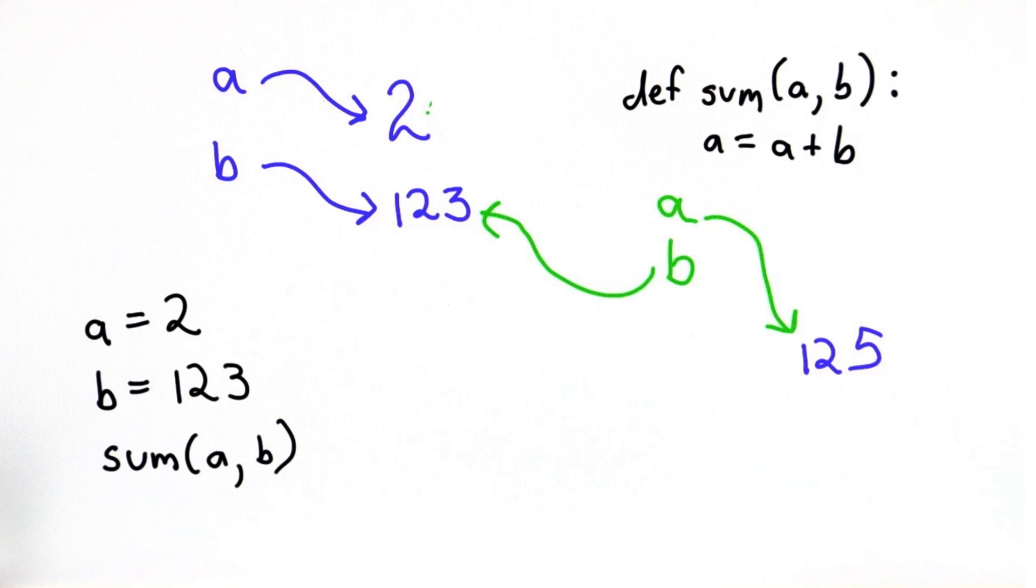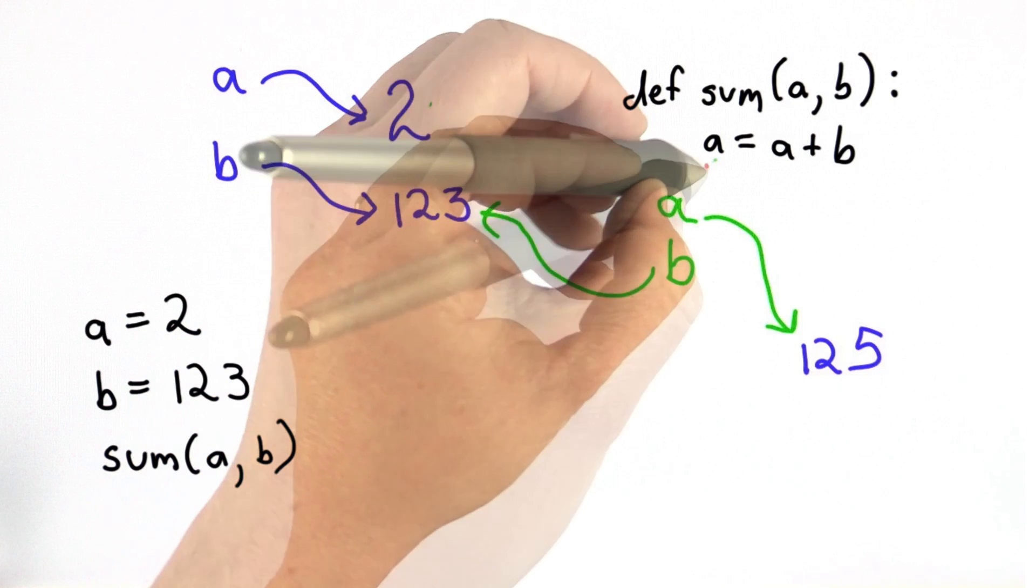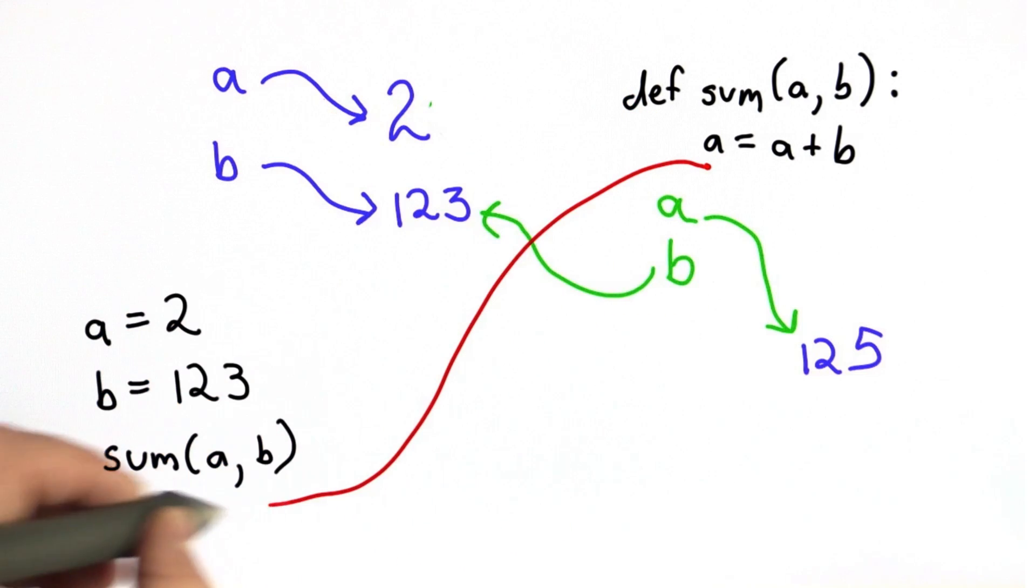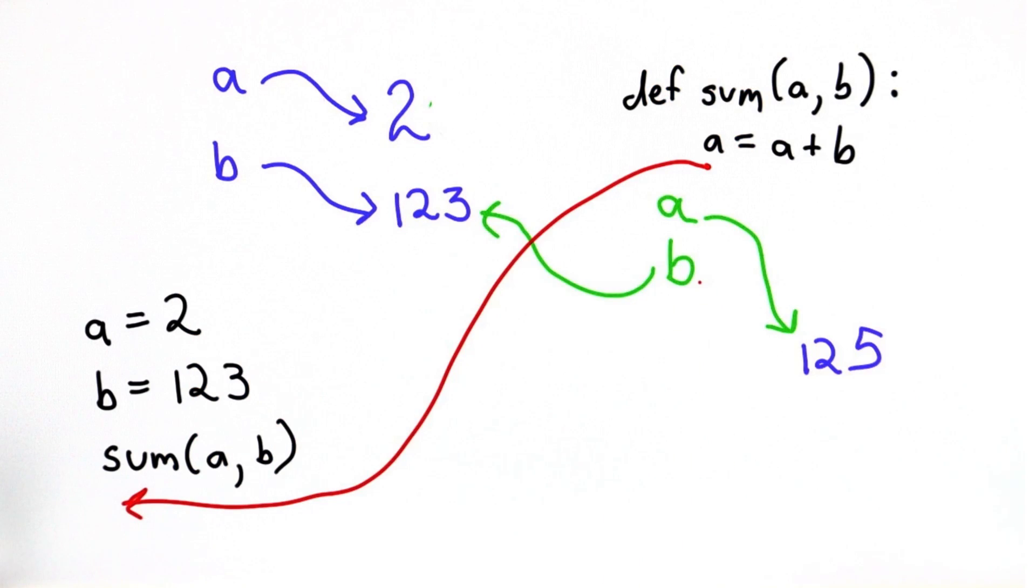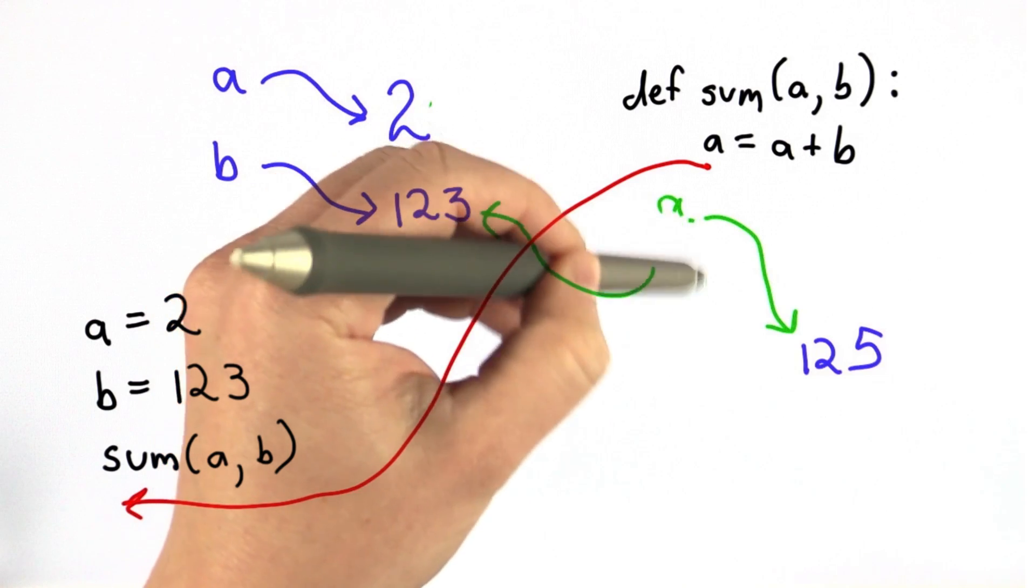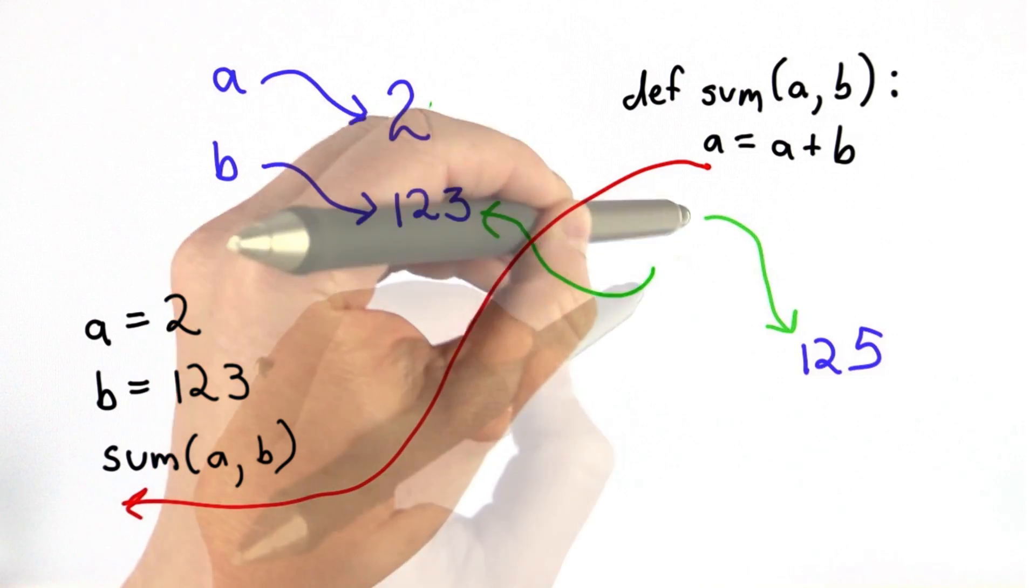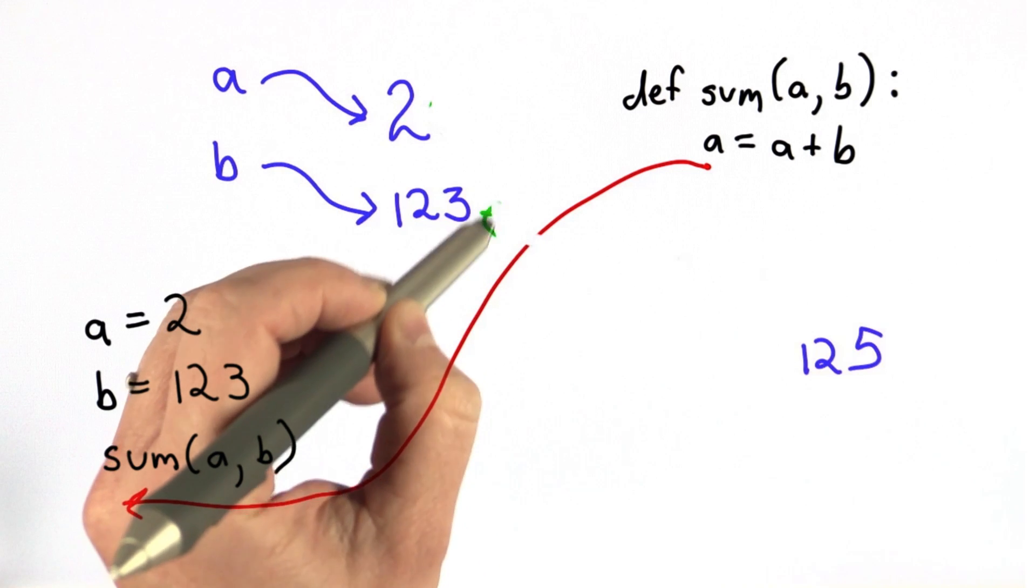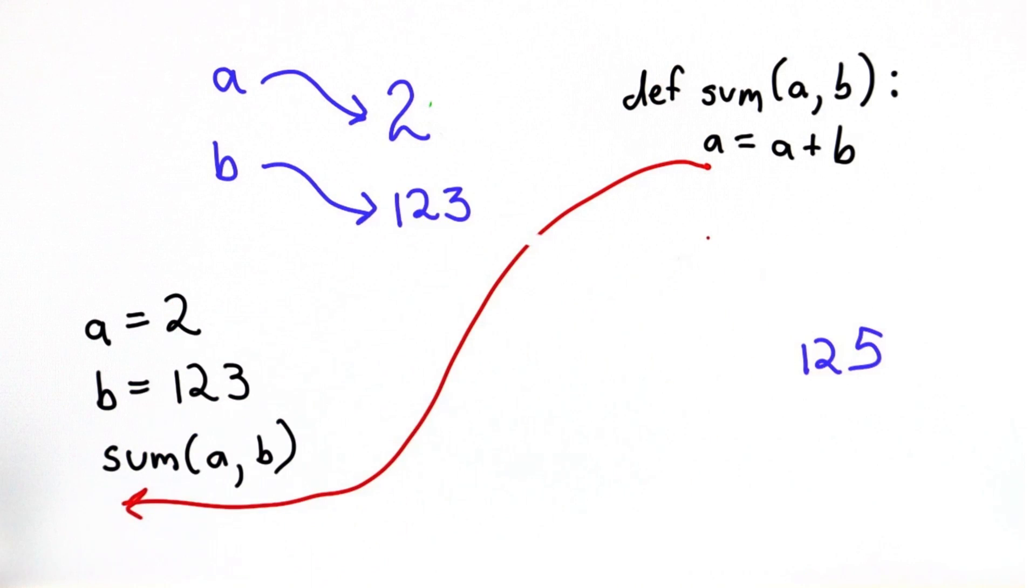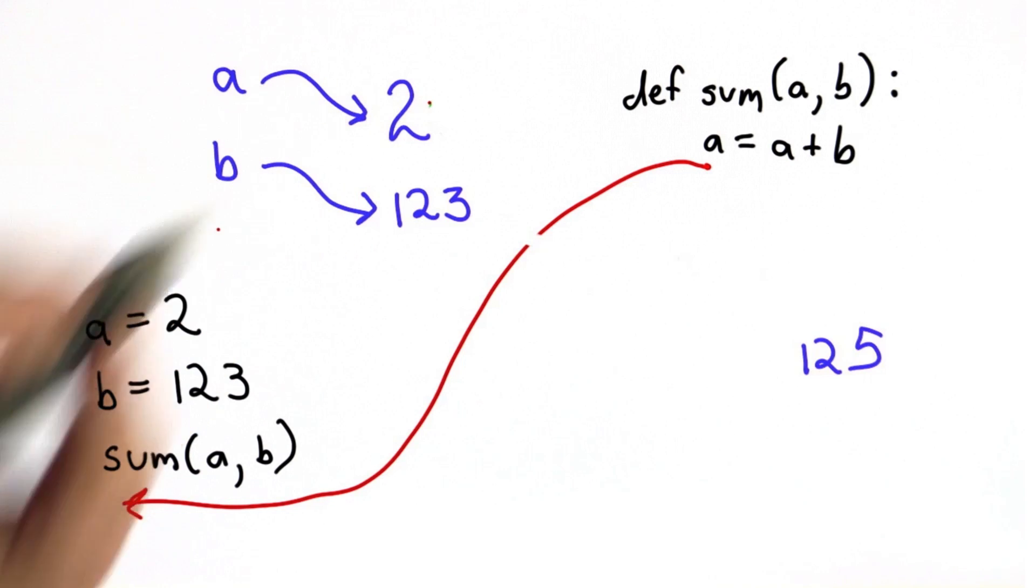When we come back from the procedure, so once we get to here, we return. We're back to running the code here. All of the parameters that were visible inside the body of sum, those are no longer visible. They were there for that execution. But they're done. We can't use those names anymore. They were only visible during that execution of the procedure. So now at this point, a refers to the number 2 just like it did before.